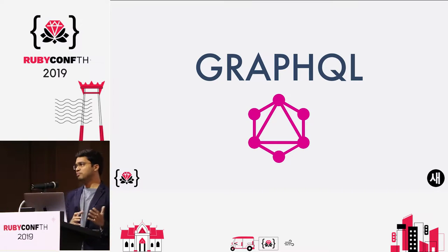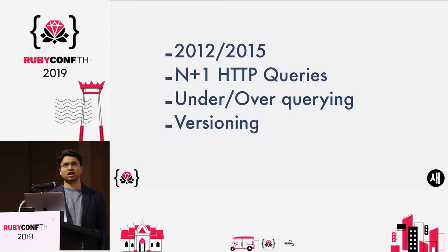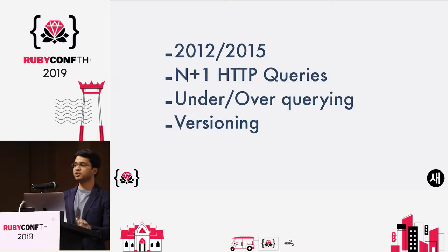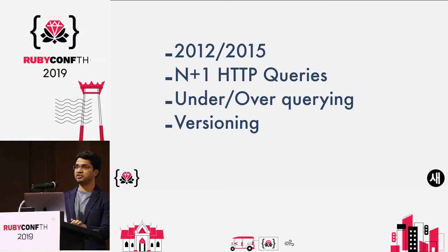Today we'll talk about what GraphQL is and how you can actually use it in your Rails applications. GraphQL came around 2012, was built around that time, and then released in 2015. During that time we were facing a lot of issues around having to maintain REST APIs or dealing with versioning in various applications.